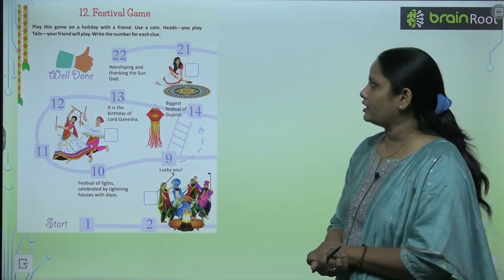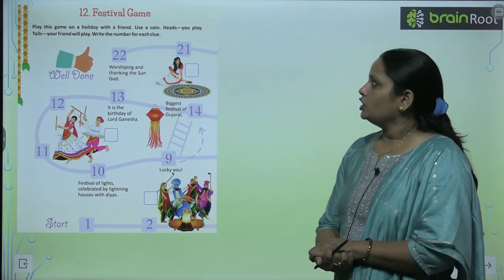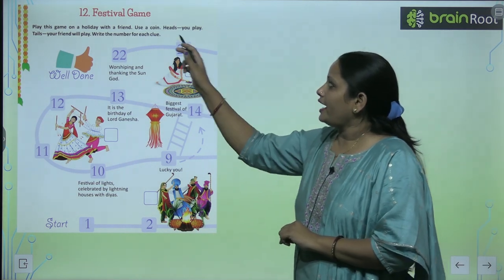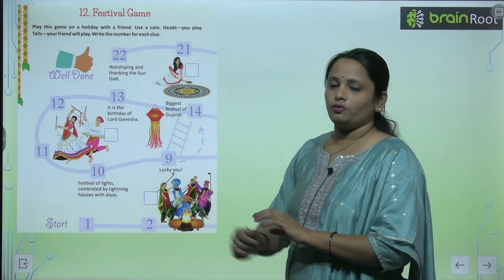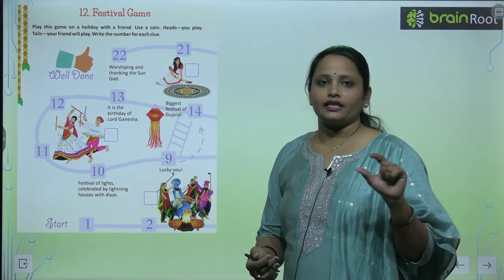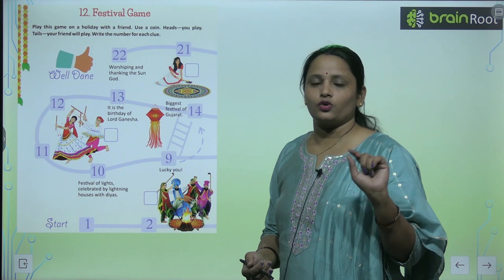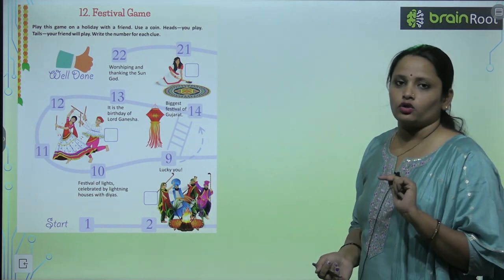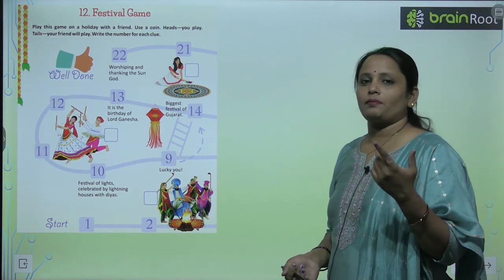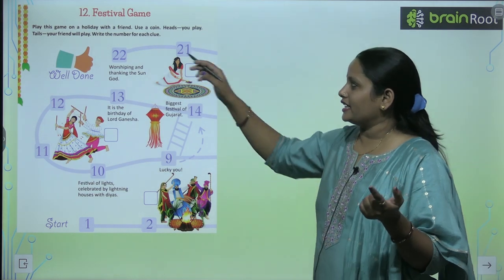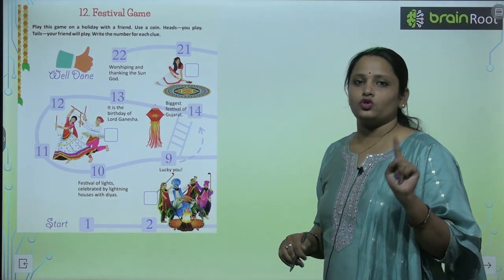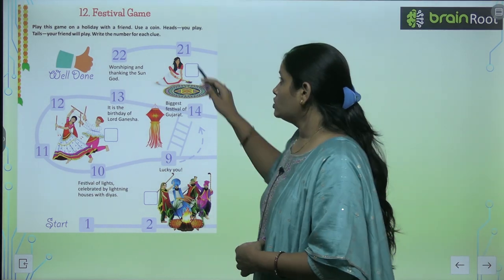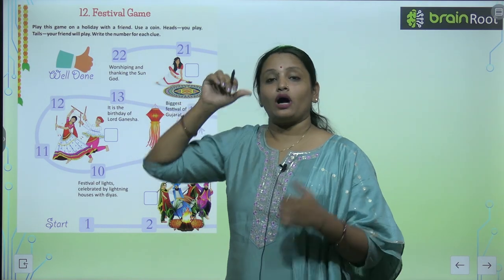Aapko apne friend ke saath ye game khelna hai. Use a coin — aapko ek coin chahiye. Heads: agar head aata hai, coin ke do parts hote hain — ek hota hai head, jahaan pe Bharat ka emblem bana hota hai, aur doosra part hota hai tail, jahaan pe one rupee ya two rupees likha hota hai.